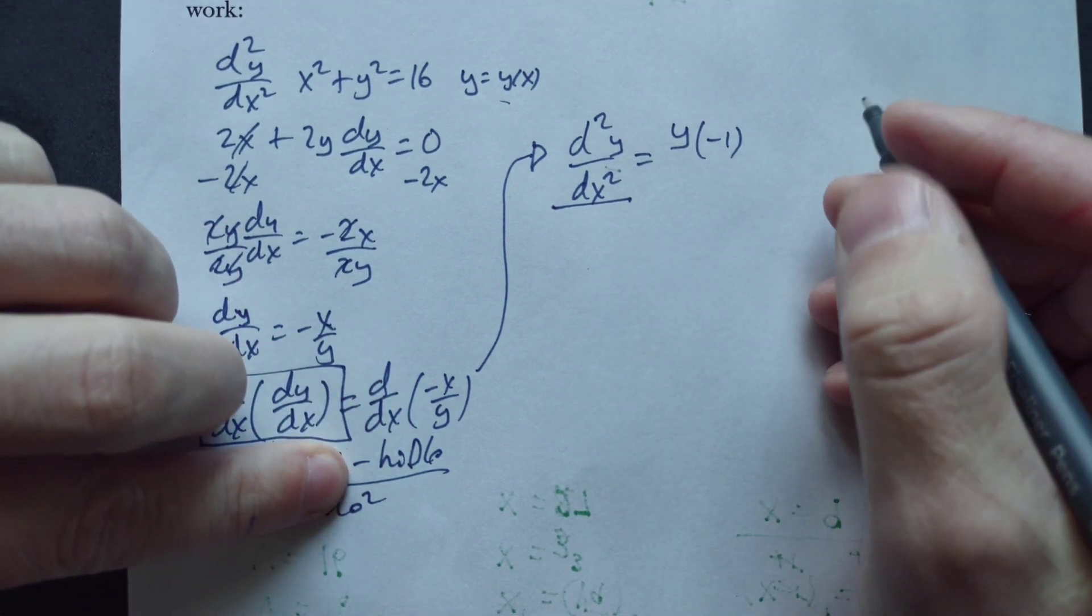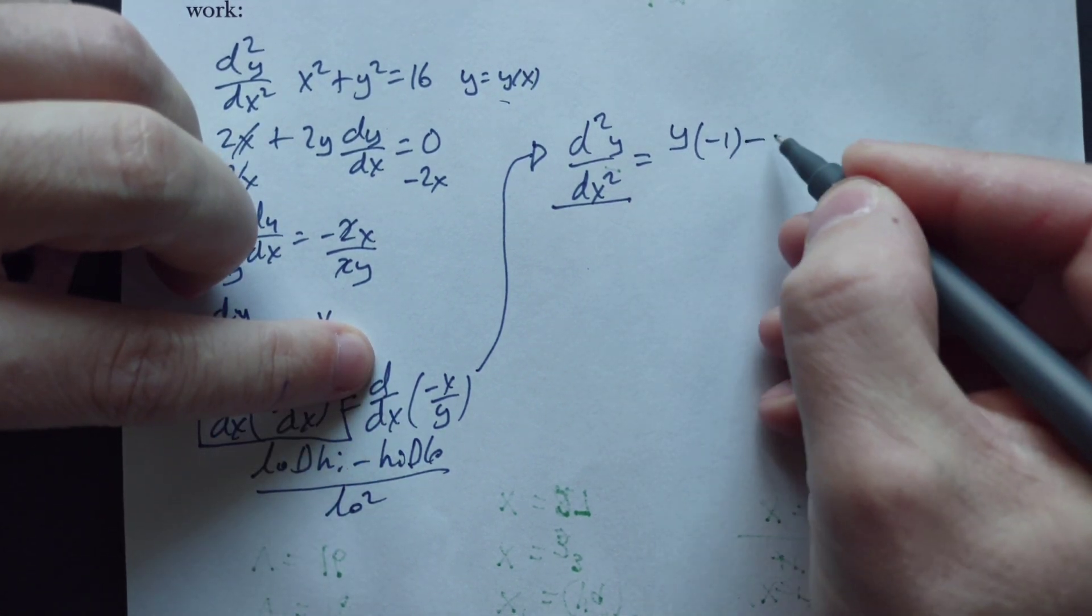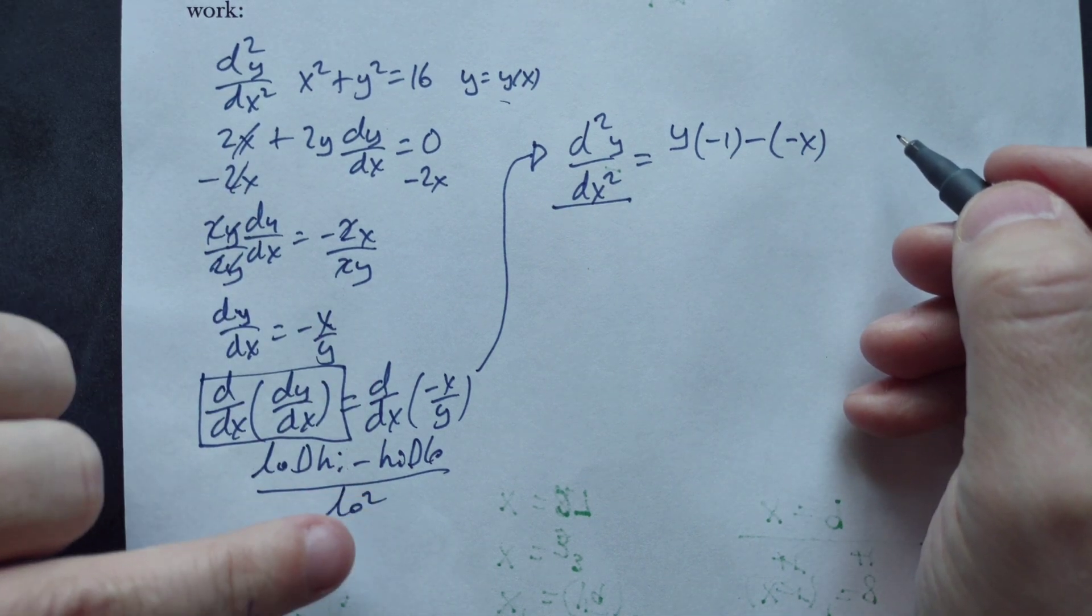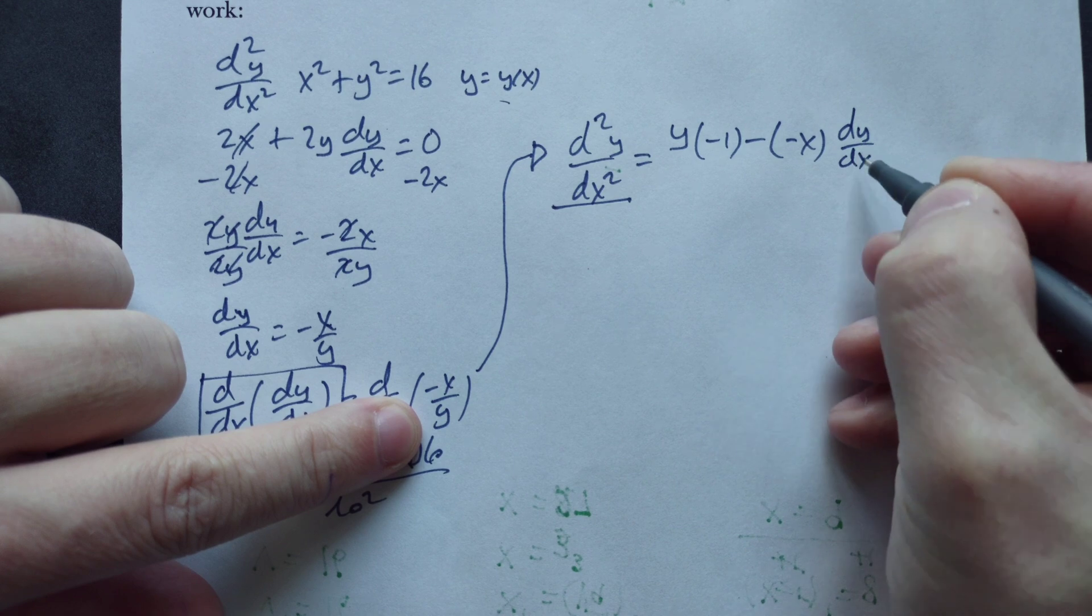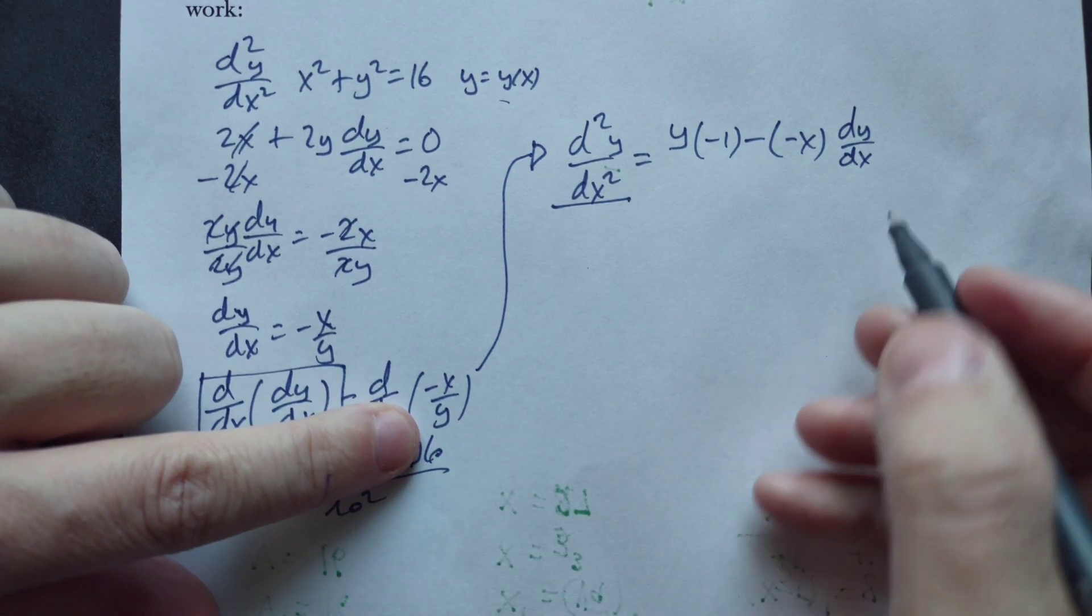Then subtract from it the high one. Now be careful, minus a negative x. The derivative of the low one again would be another dy dx. That's all you can write for it because it's y, some unknown function of x.